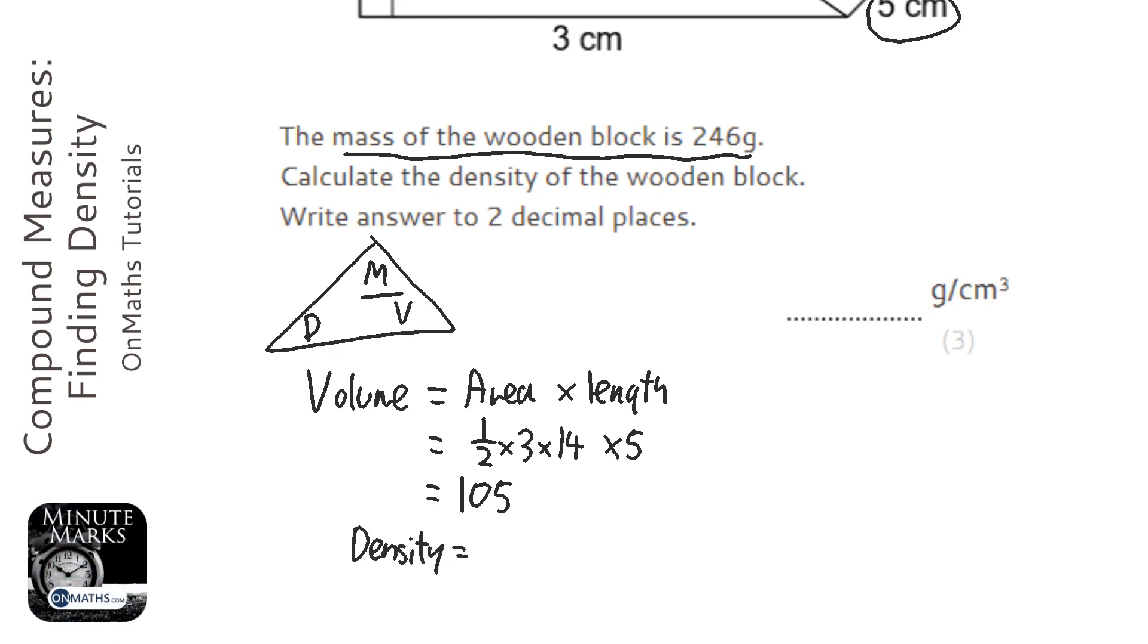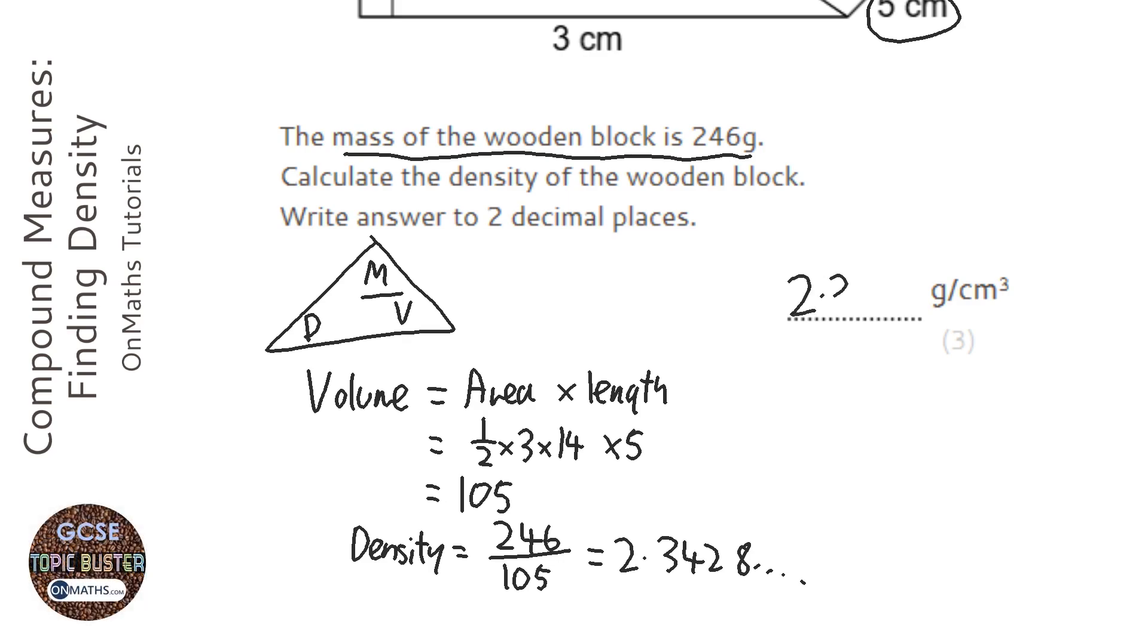To work out density, I'm going to do the mass, which is 246, over the volume, which is 105. So 246 divided by 105, and I get 2.3428... It says to round to two decimal places, so 2.34.